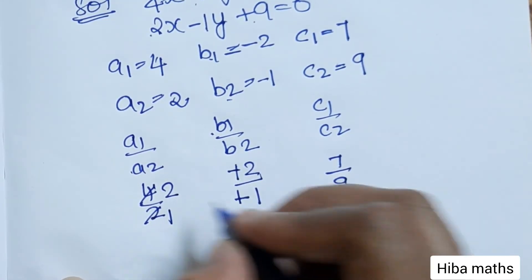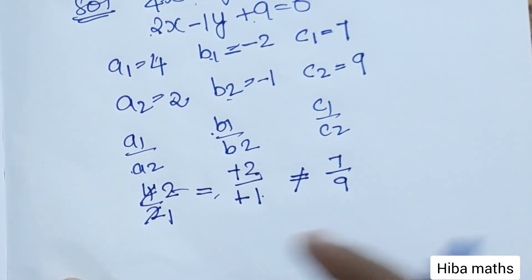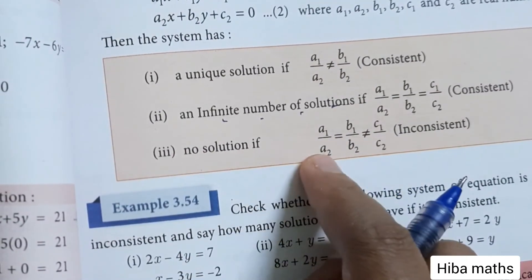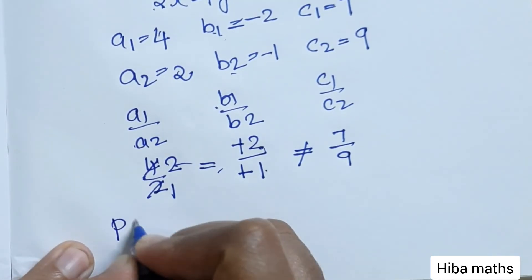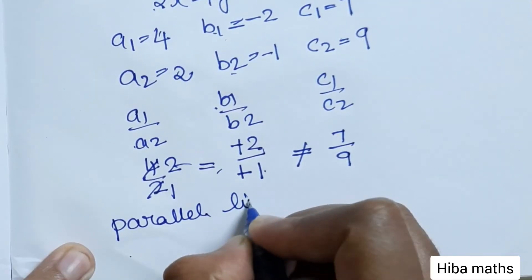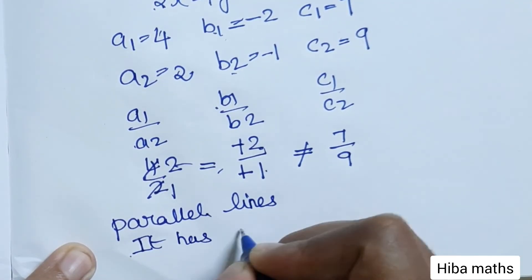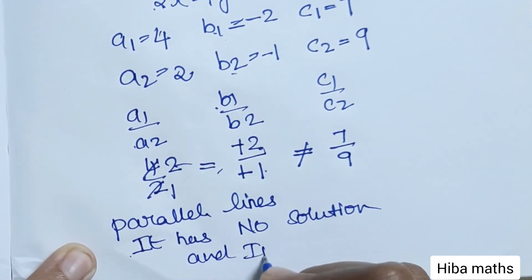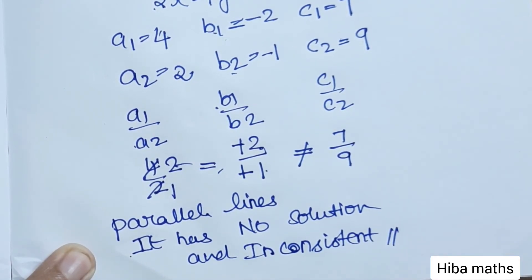A1/A2 equals 4/2 equals 2. B1/B2 equals minus 2 over minus 1 equals 2. So A1/A2 equals B1/B2 equals 2. But C1/C2 equals 7/9, which is not equal to 2. Since A1/A2 equals B1/B2 but is not equal to C1/C2, this system is inconsistent — these are parallel lines with no solution.